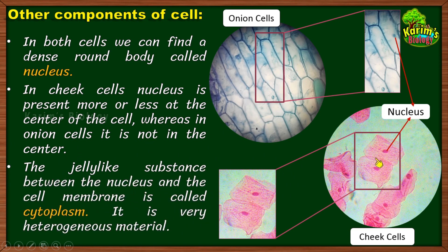Now let us find out what the inner part of the cell contains. Within the cell, between the outermost boundary and the nucleus, the remaining part is filled with a fluid or jelly-like substance called cytoplasm. So what is cytoplasm? Cytoplasm is a jelly-like material present between the nucleus and the cell membrane. Cytoplasm is said to be a heterogeneous material. What is the meaning of heterogeneous material? Why is cytoplasm referred to as a heterogeneous material?